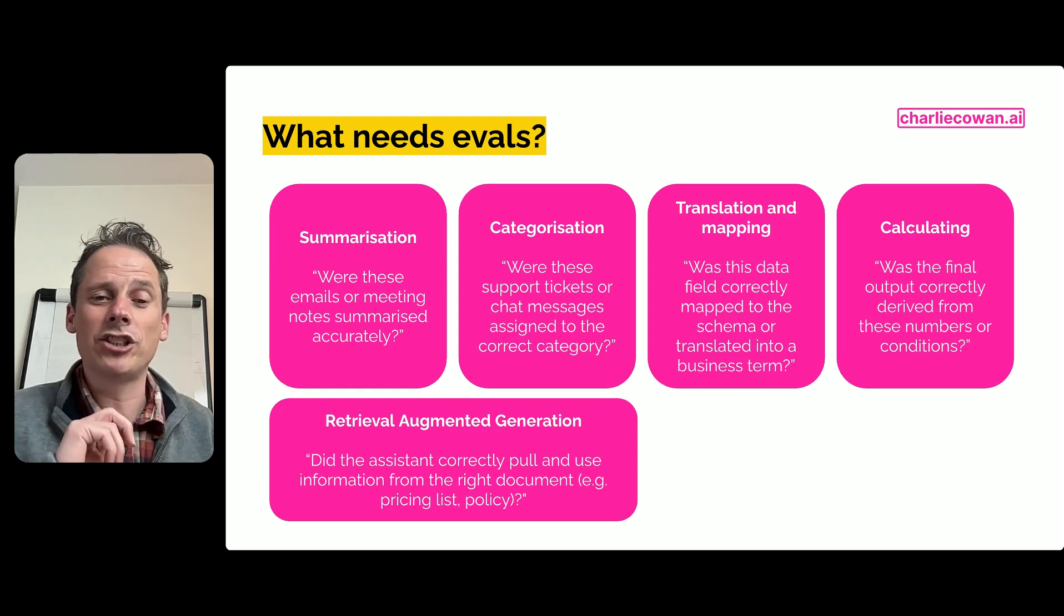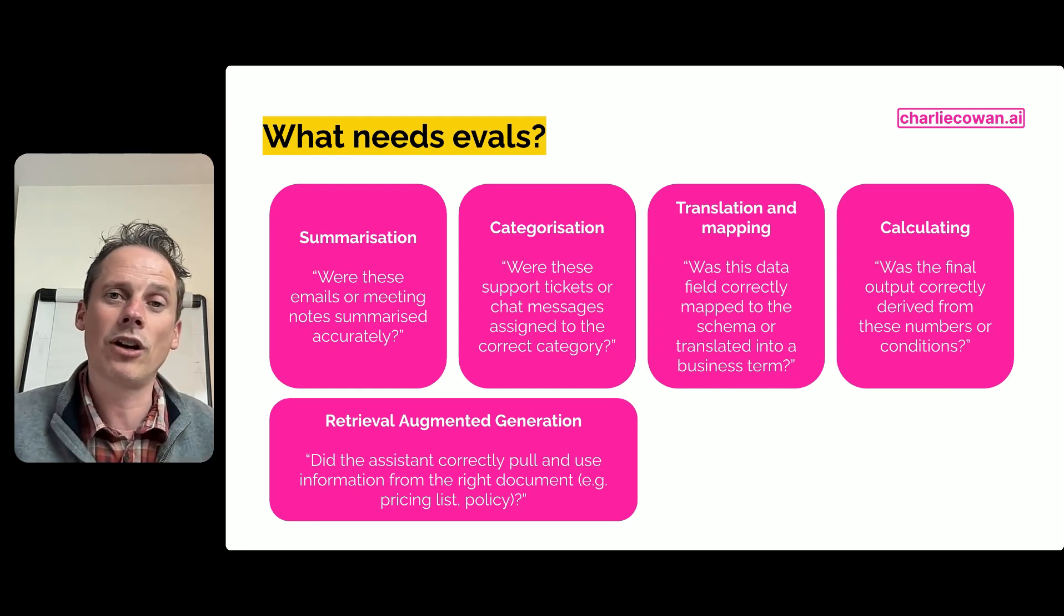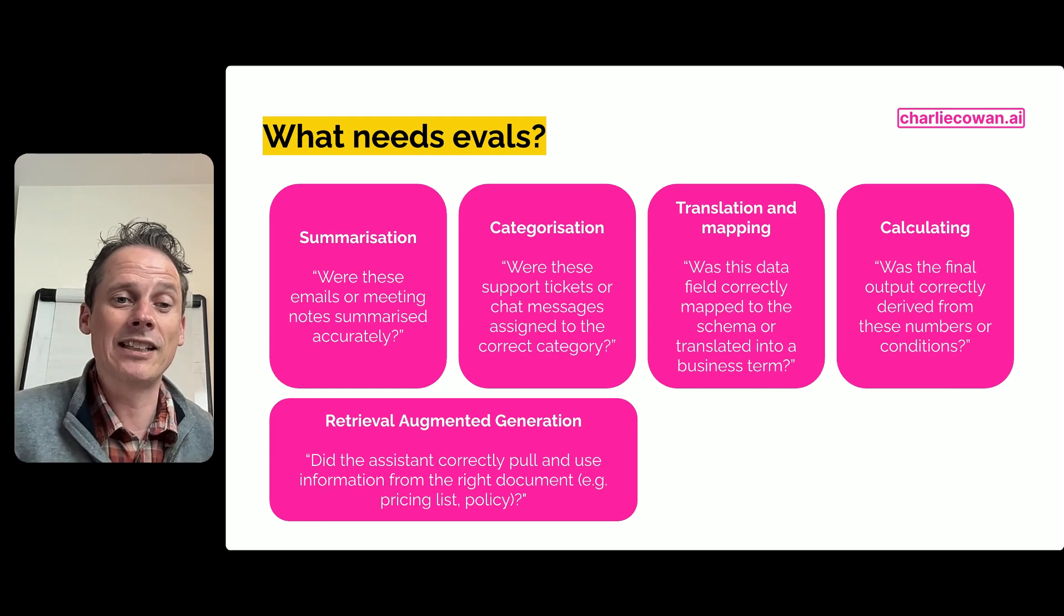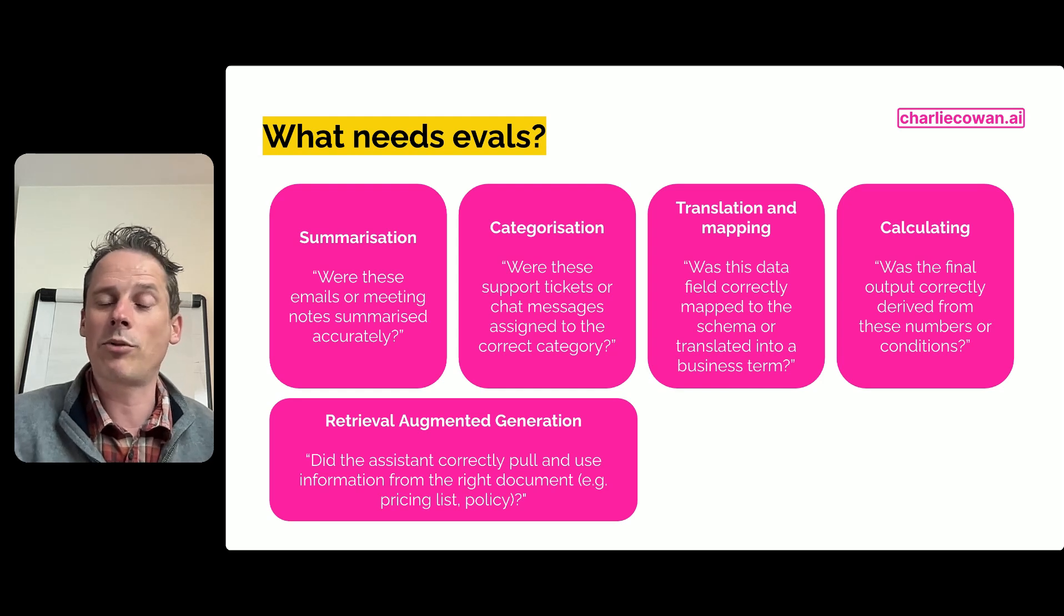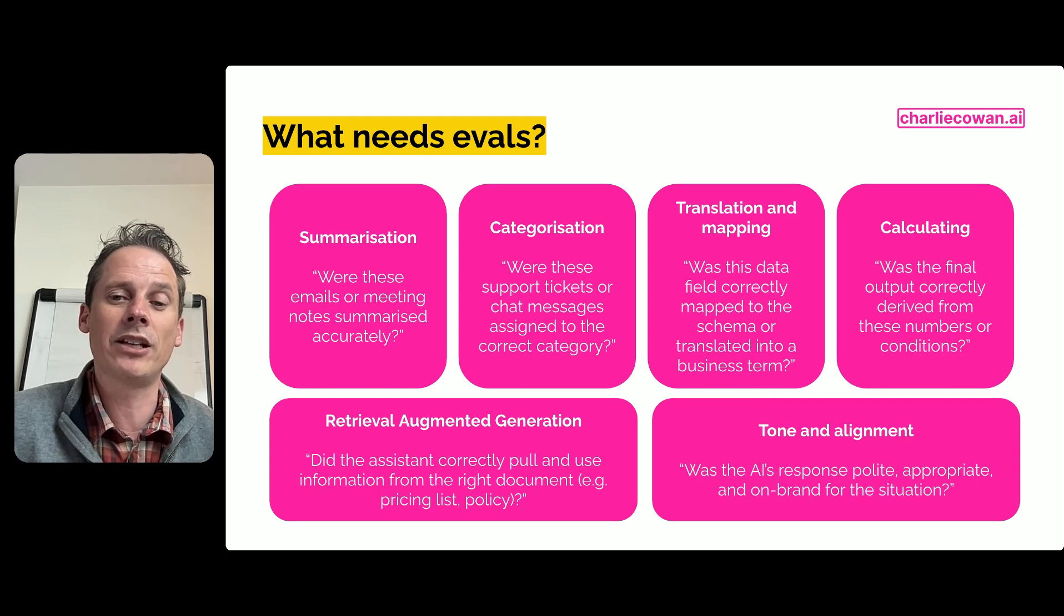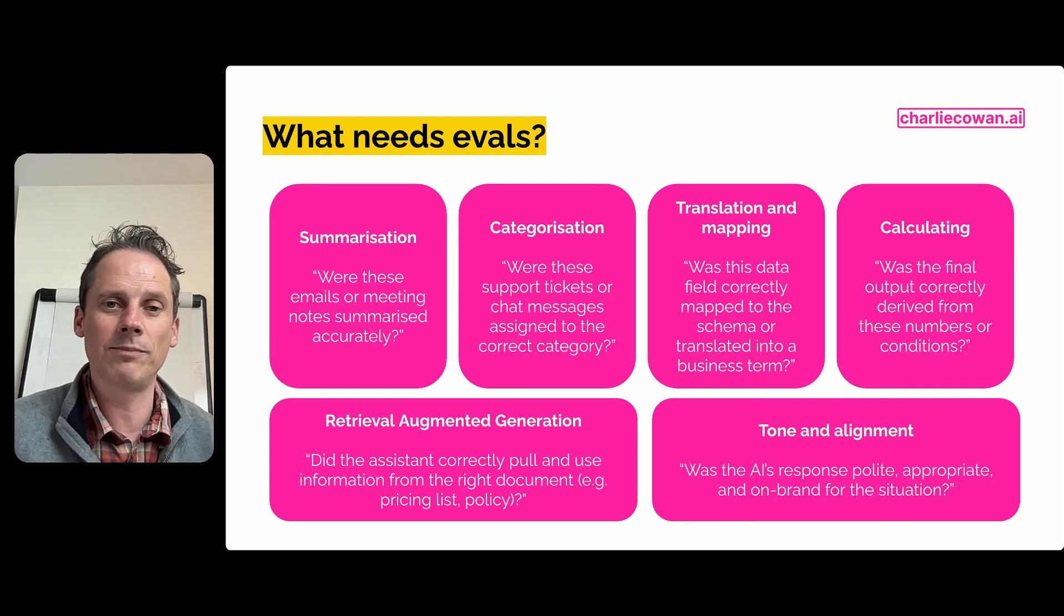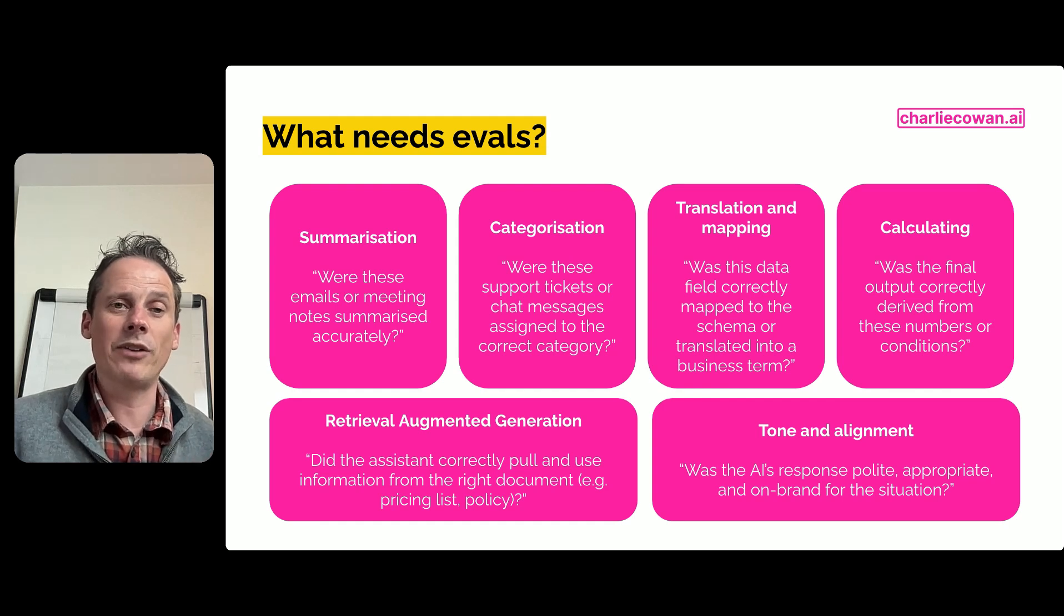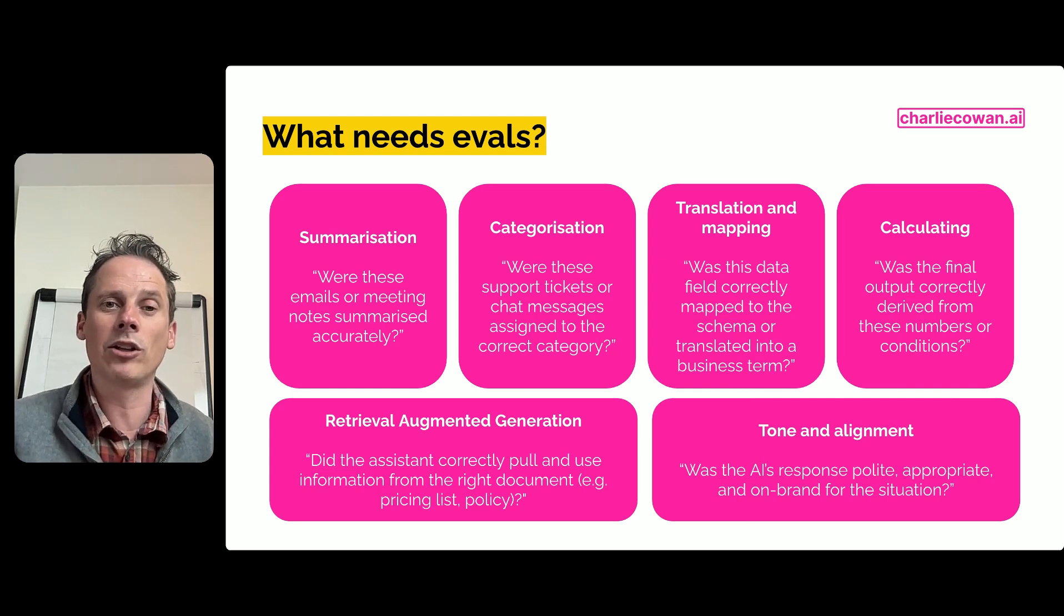Retrieval augmented generation, which you don't need to worry about too much, but it's about accessing some data within your company's filing systems. So did the assistant correctly pull and use the information from the right document, whether that was a pricing list or a policy or maybe some customer information? And then finally, about the tone and the messaging. Was the AI's response polite and appropriate and on brand for the situation? So these are all some examples of when you might need evals to be able to test that your prompt and your AI model is following your prescribed instructions.